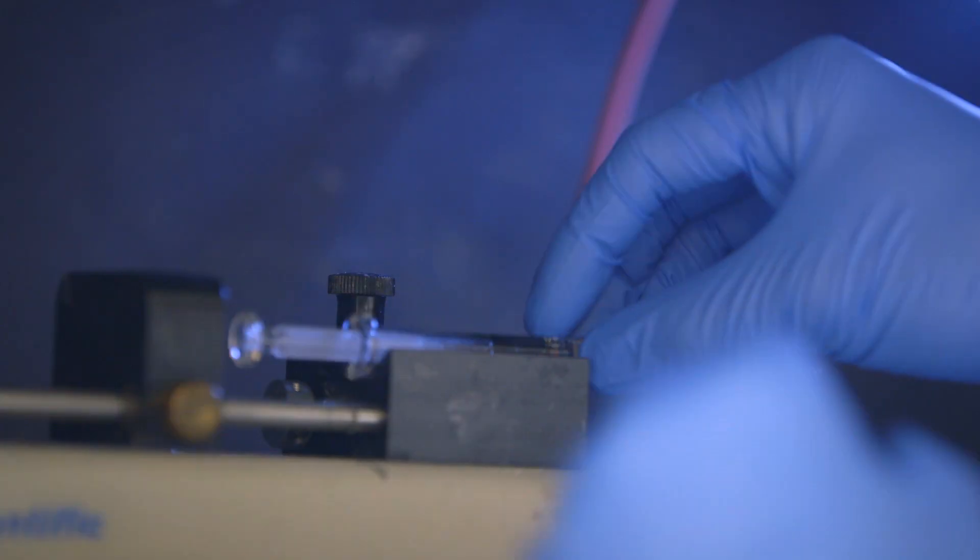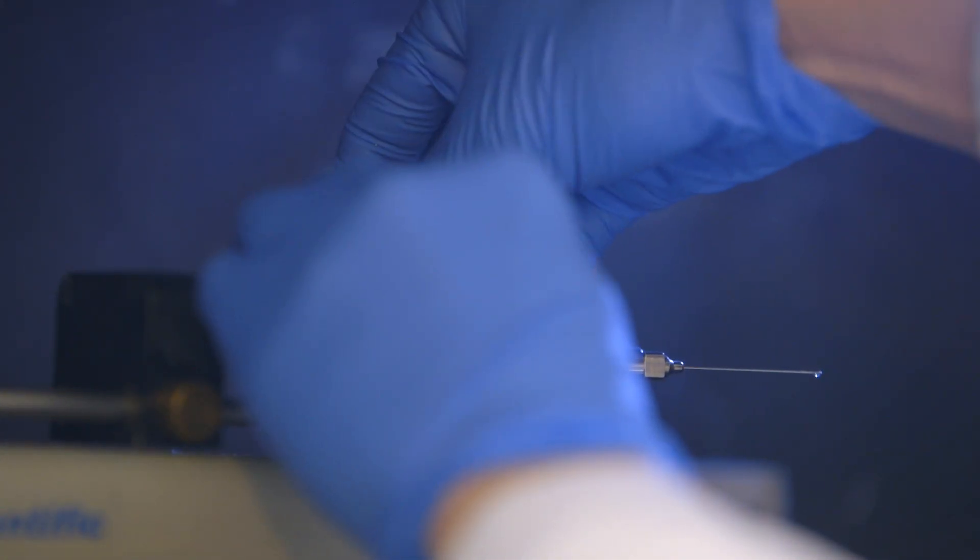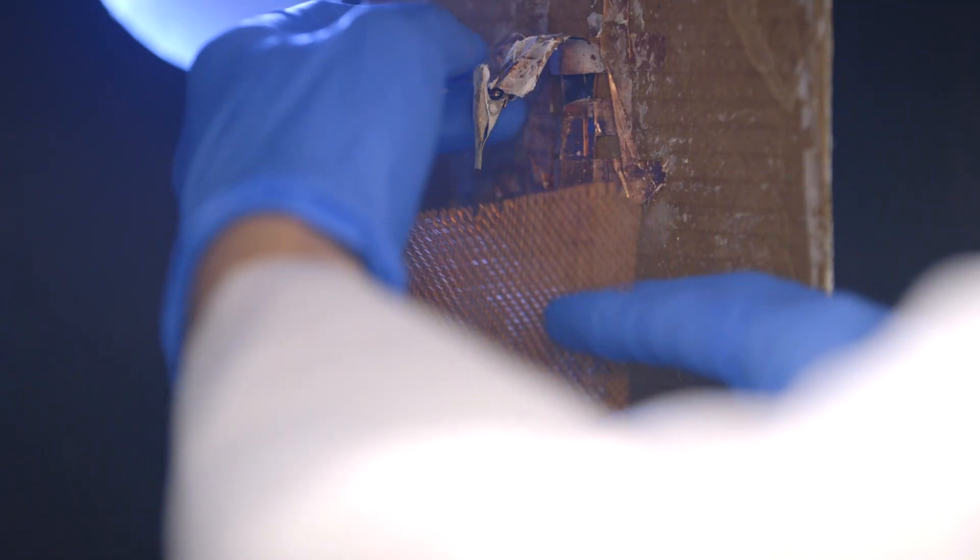We use a process called electrospinning to spin out this polymer into nanofibers. Their diameter is about a thousand times thinner than a human's hair.